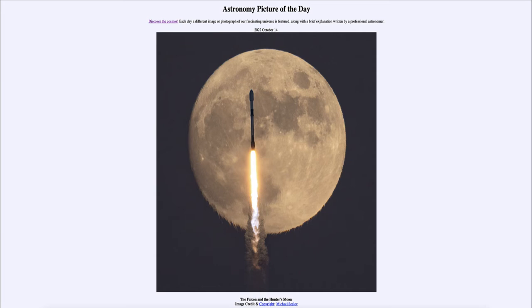We can see that distortion — it distorts the atmosphere, changes the way it bends light, and therefore we get a distorted moon. Once the rocket has passed by and the atmosphere has settled back down, it will go completely back to normal. So it is only that temporary distortion due to the rocket passing through Earth's atmosphere.